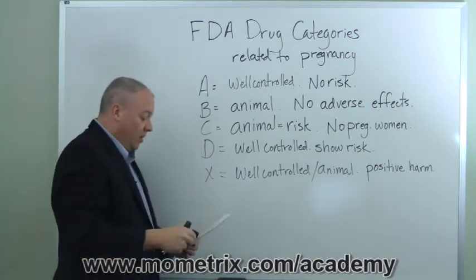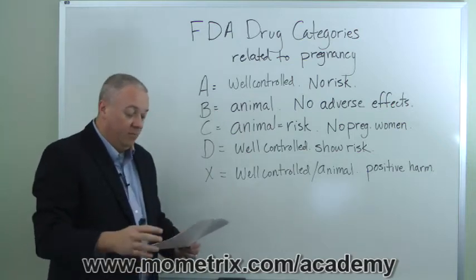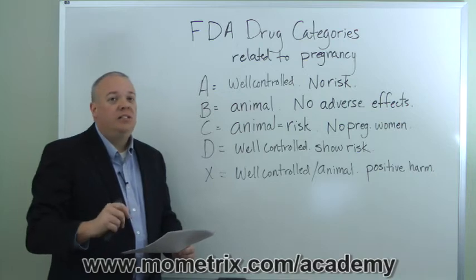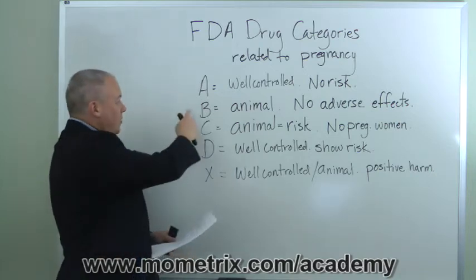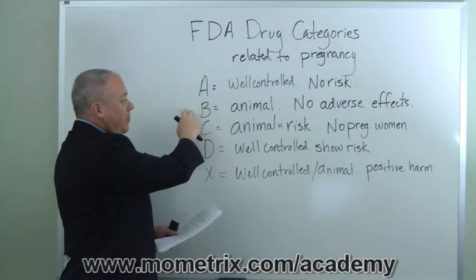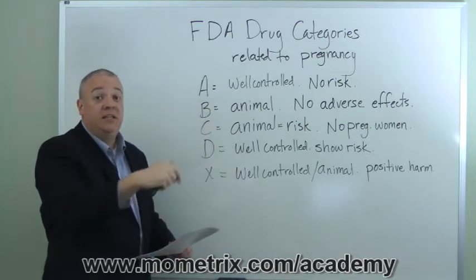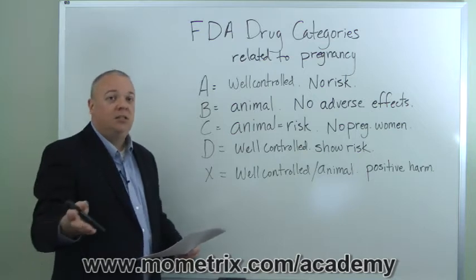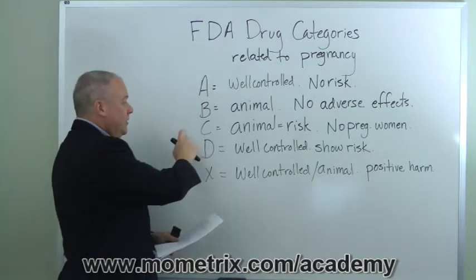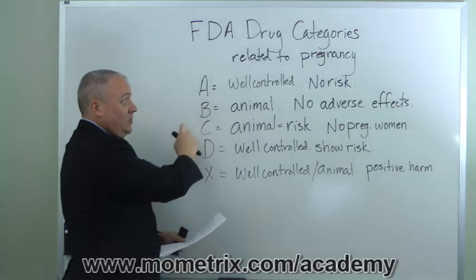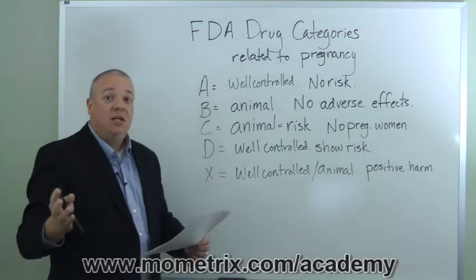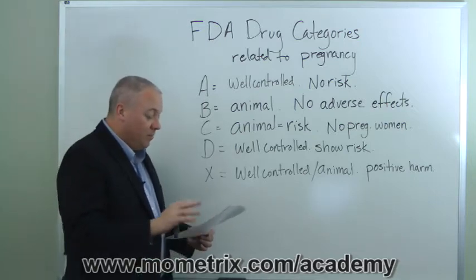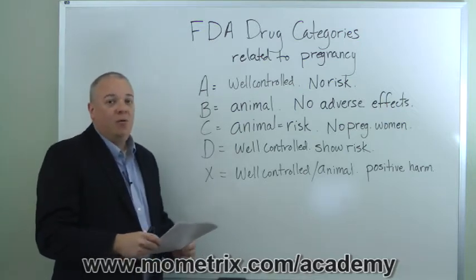Category C includes animal studies that do show adverse effects, but there are no studies on pregnant women available. This is sort of a subset of B. Remember, B included animal studies that did show adverse effects on unborn animal fetuses, yet the pregnant women's studies showed no adverse effect. Category C would be: they have the animal studies showing adverse effect, but no pregnant women's studies to go along with that.